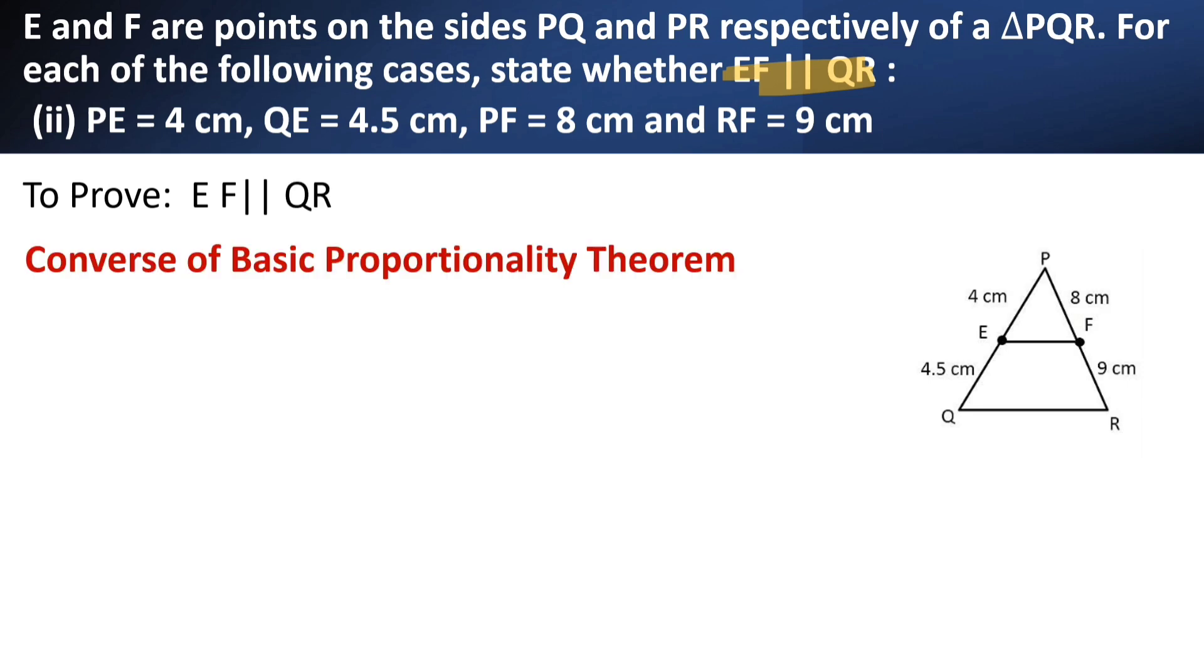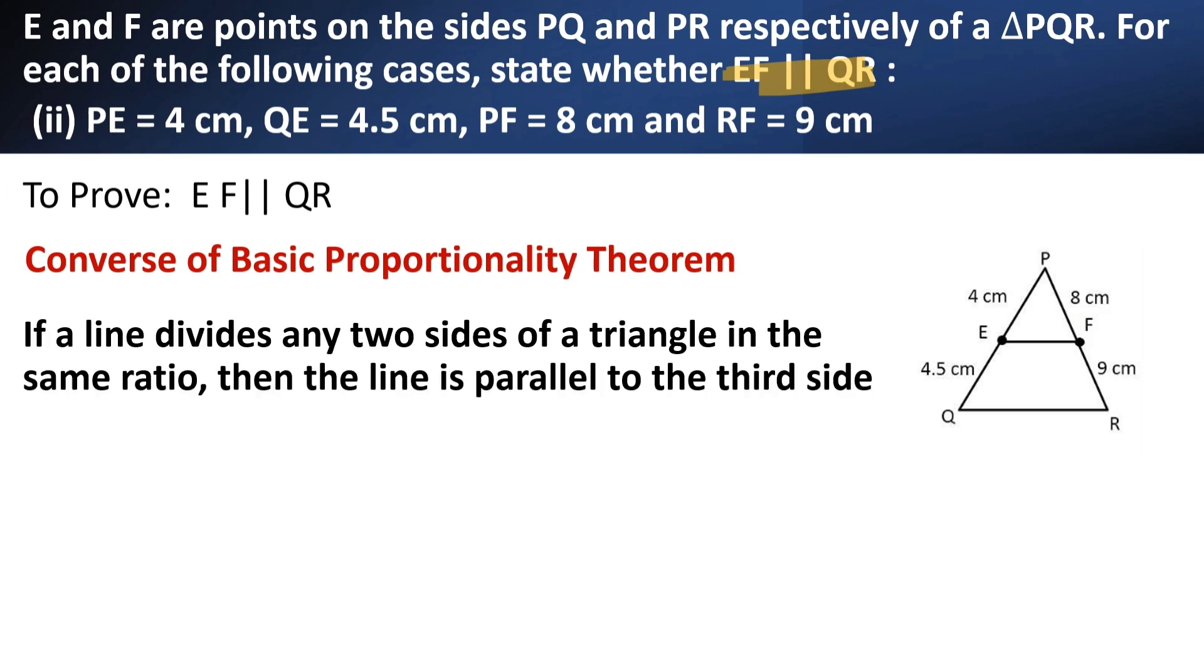Just remember Converse of Basic Proportionality Theorem. What does it state? If a line divides any two sides of a triangle in the same ratio, then the line is parallel to the third side. Same as the previous.